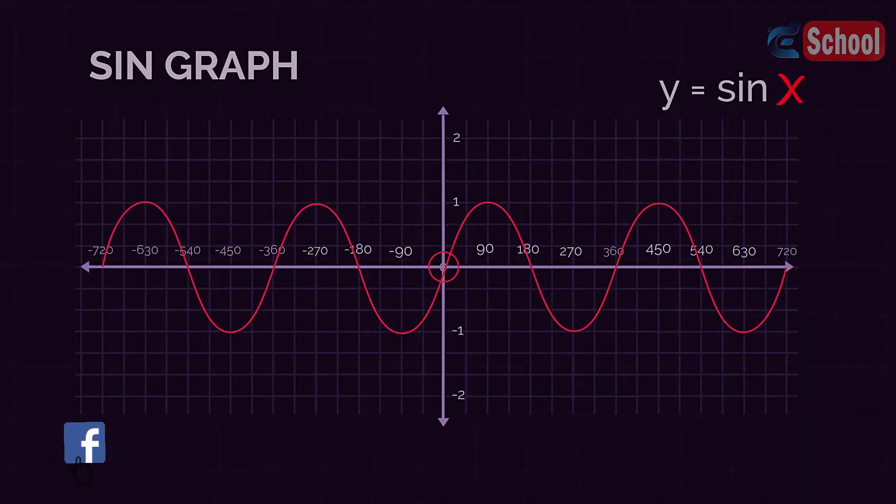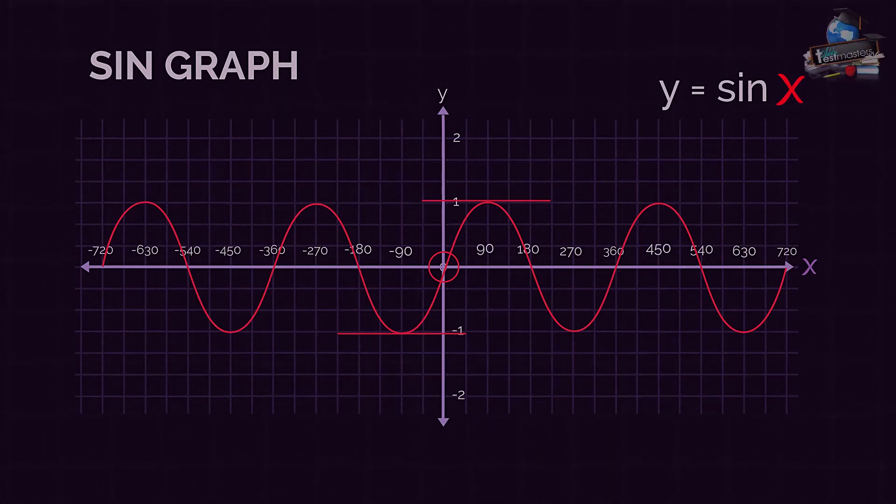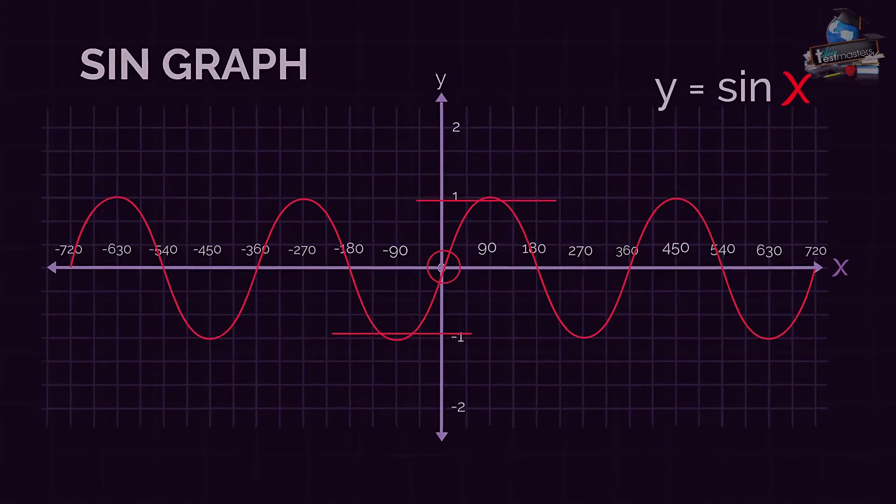The sine and cosine graphs are really similar. Let's have a look at the sine graph. It crosses through the origin, has a maximum of 1 and a minimum of negative 1, and that repeats forever in the positive and negative directions.